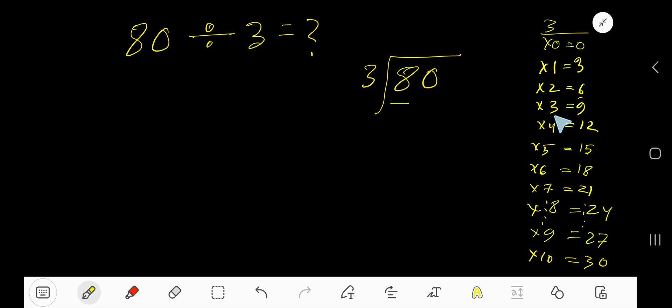3 goes into 8. How many times? 3 times 9, which is greater. So 2 times. 2 times 3, 6. Subtract 2.